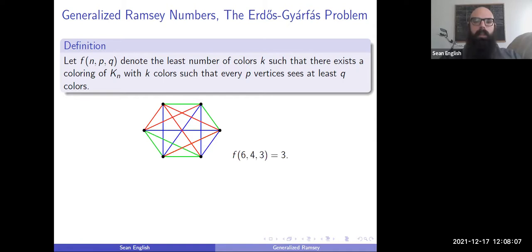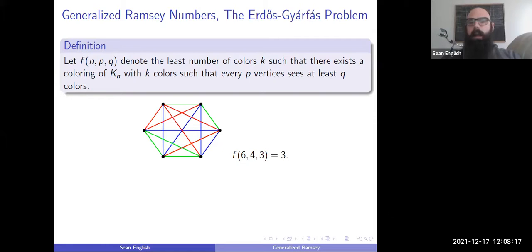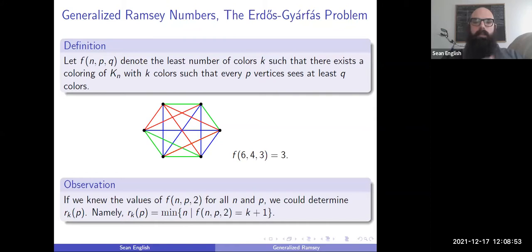As an example, I've colored K_6 with three colors, and if you look at any K_4, every subgraph with four vertices sees at least three colors — none of them have only two colors. If I tried to color K_6 with only two colors, I'd definitely have a K_4 with only two colors. So this shows that for six vertices, wanting each four-clique to see three colors, I need at least three colors and can achieve it. This is essentially the inverse problem of Ramsey: instead of outputting the number of vertices, our output is the number of colors.